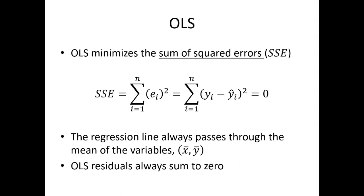Ordinary least squares, or OLS for shorthand, minimizes the sum of the squared errors. That's going to be termed SSE. We're going to make lots of use of the SSE, the sum of the squared errors.